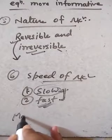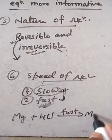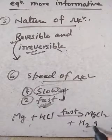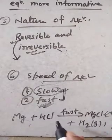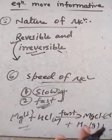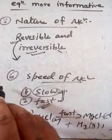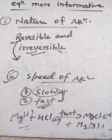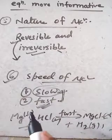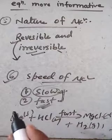For example, Mg + HCl → MgCl2 + H2 with 'fast' written on the arrow. These are the six ways to make a chemical equation more informative: physical state, concentration, reaction conditions, heat changes, nature of reaction, and speed of reaction. In an examination, if asked how to make chemical equations more informative, write and remember all six points and make notes for future reference.